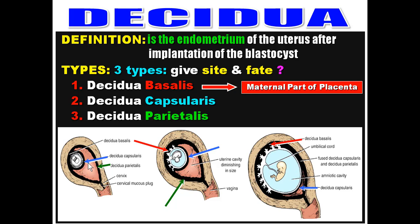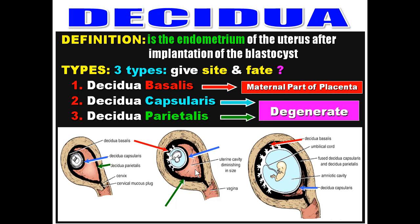Decidua capsularis and decidua parietalis fuse with each other and degenerate. During the pregnancy, the uterine cavity is obliterated by fusion of decidua capsularis and decidua parietalis. Decidua basalis forms the maternal part of the placenta; decidua capsularis is between the blastocyst and the uterine cavity; decidua parietalis is the remaining part of the decidua.